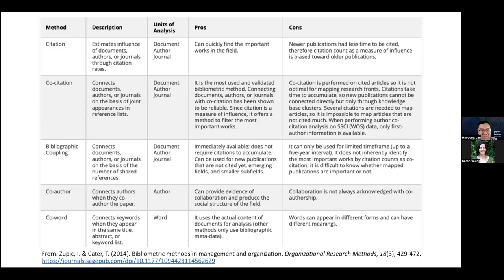Bibliographic coupling connects documents, authors, or journals on the basis of the number of shared references. It can immediately be available and does not require citations to accumulate. However, it can only be used for a limited time frame, for example up to a five-year interval, and it does not inherently identify the most important works by citation counts as co-citation does.